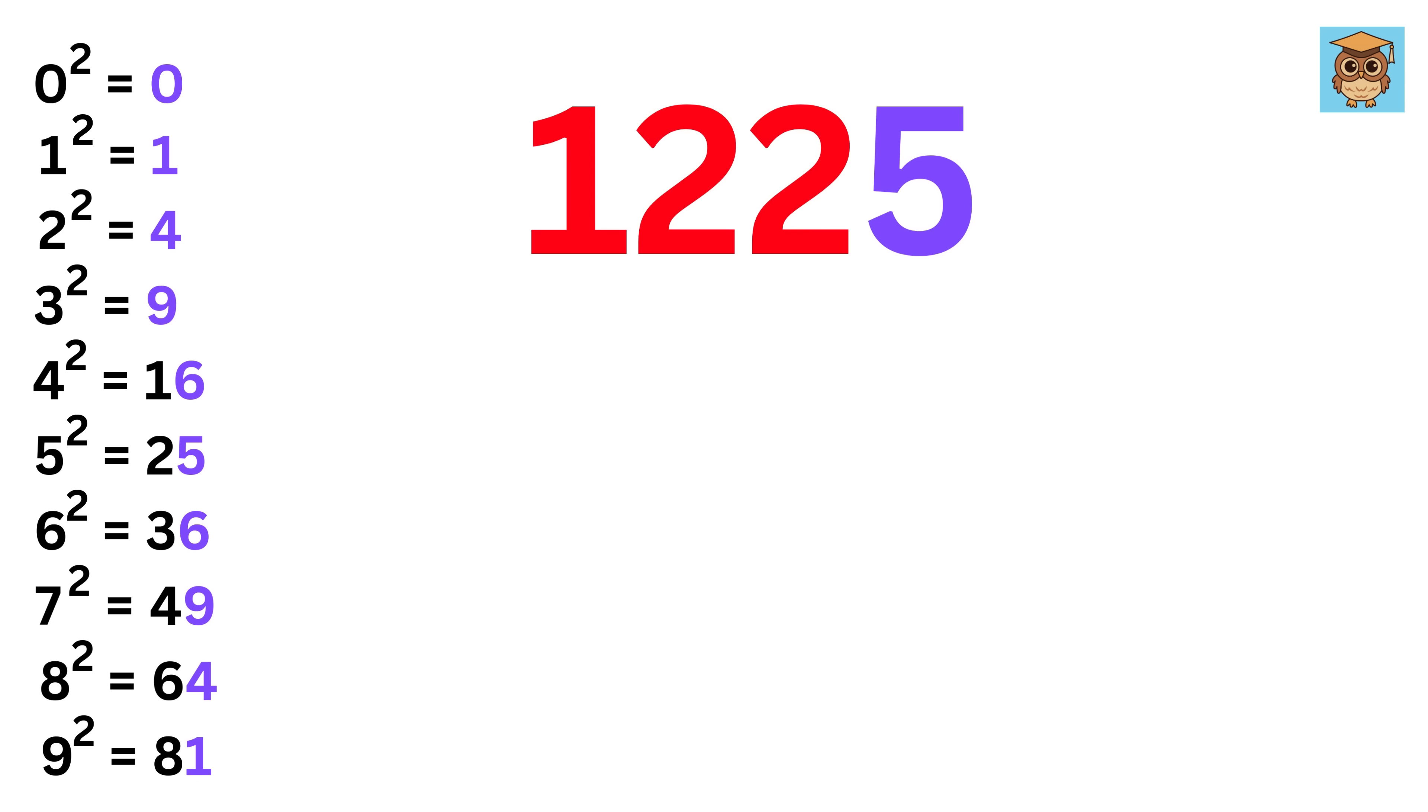It's 5, right? And now look at the square here whose last digit ends up in 5. It's 5 itself. So, write the digit 5 here.